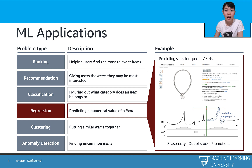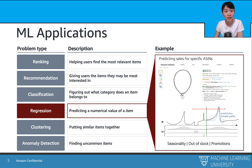A classification problem outputs a categorical value. What if we want a continuous numerical output? That would be a regression problem, which will output any numerical value within a range.